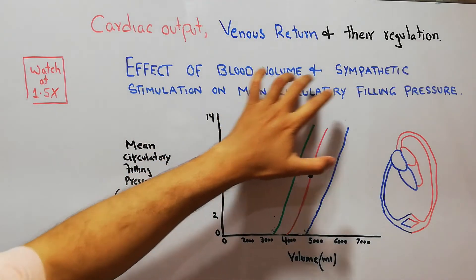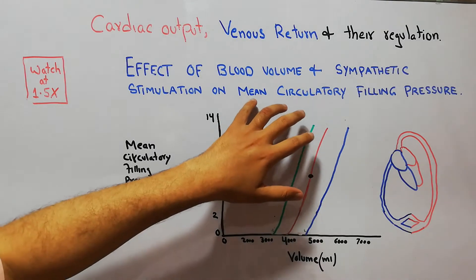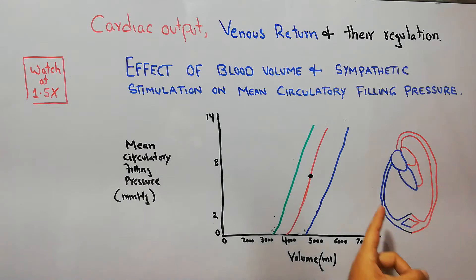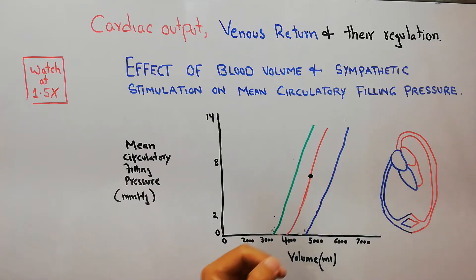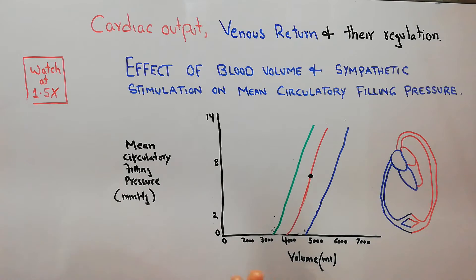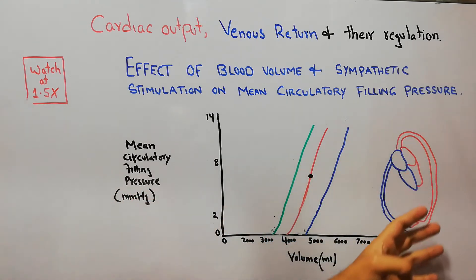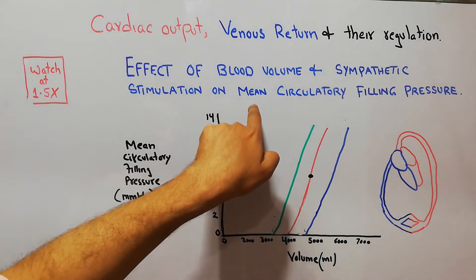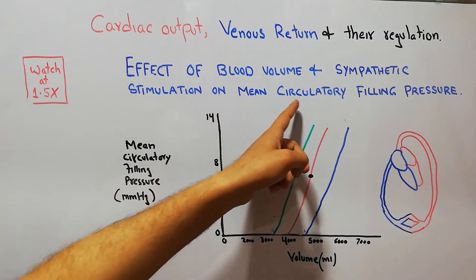Today we are going to discuss the effect of blood volume and sympathetic stimulation on mean circulatory filling pressure. In our last lecture we discussed that mean circulatory filling pressure is the pressure in the system when heart beating has stopped and blood ceases to flow. The pressure becomes equalized across the arterial and venous sides — that is the mean circulatory filling pressure. We also discussed that if blood flow to the pulmonary vessels is stopped and pressure is measured in systemic vessels only, that is mean systemic filling pressure.